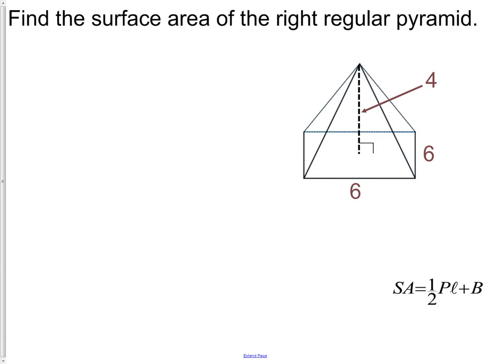Find the surface area of the right regular pyramid. Regular means that the base of that pyramid is a square. So we have a right regular pyramid.